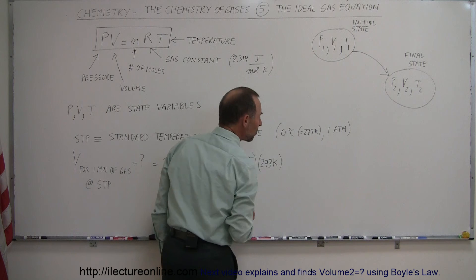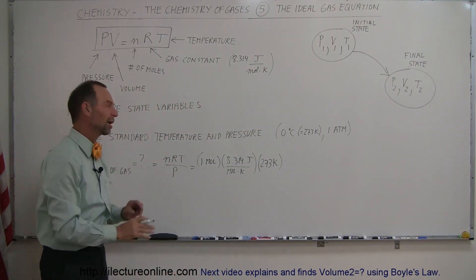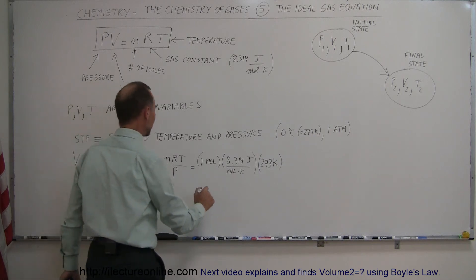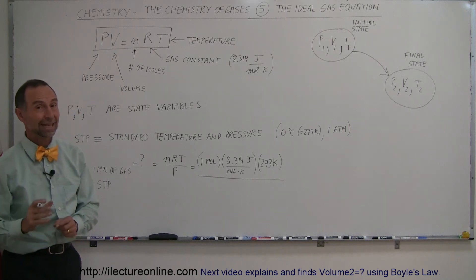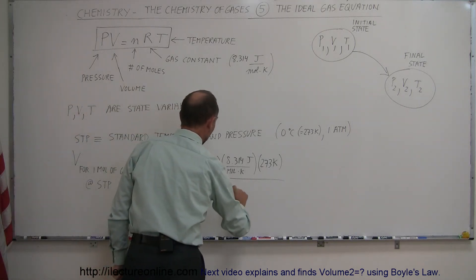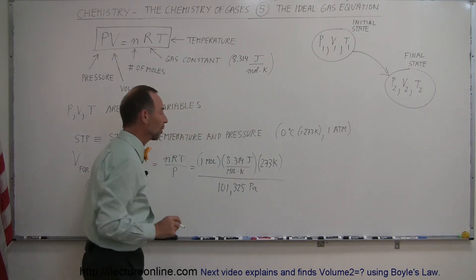Of course, some of you may say it's not 273, it's actually 273.15, and you're absolutely correct, but we'll just round it to 273. Then we divide that by the pressure, and one atmosphere in standard units is 101,325 pascals, which is newtons per square meter.